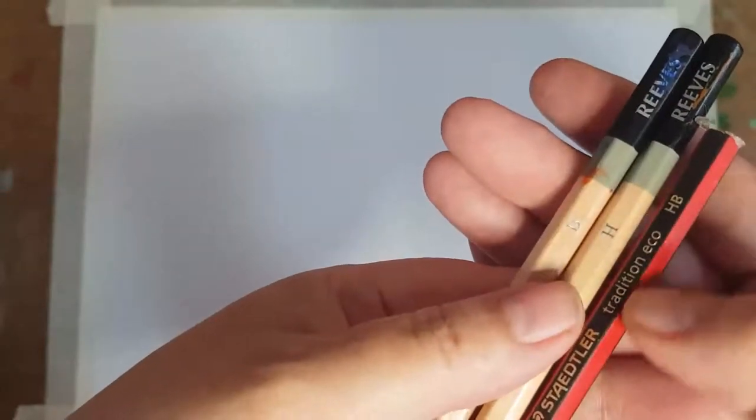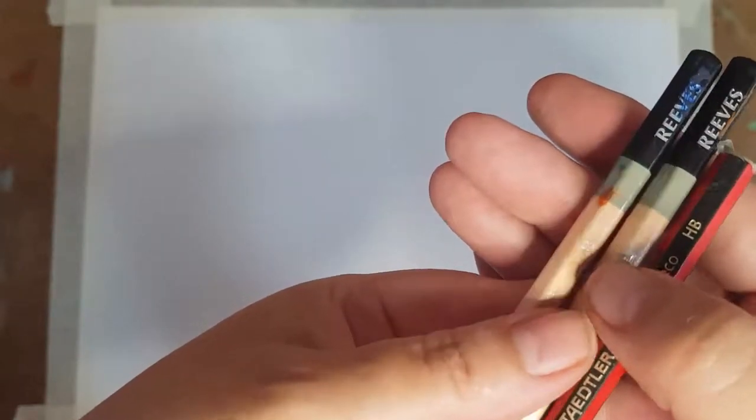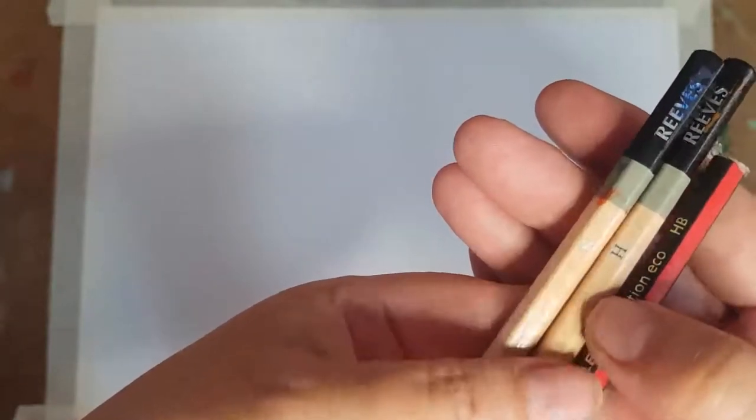B, H and HB. HB is a combination of soft B and hard H pencils. They are most commonly used in school.